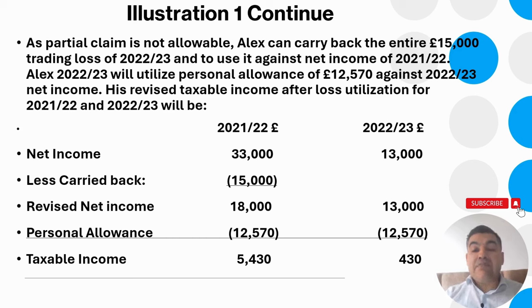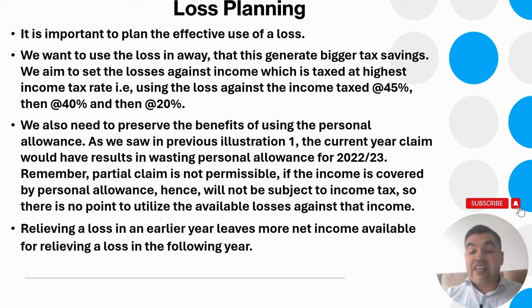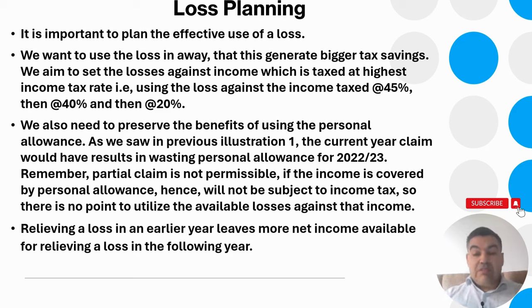Loss planning: we want to use the loss in a way that generates the biggest tax saving. We aim to set losses against income taxed at the highest income tax rate — for example using the loss against income taxed at 45%. For individuals, rates are 45%, 40%, and 20% depending on earnings. For example, if in 2022-23 an individual has a trading loss of £100,000 or £200,000 and property income of £40,000, while in the previous year trading income was £300,000, the best approach is to carry back the losses.